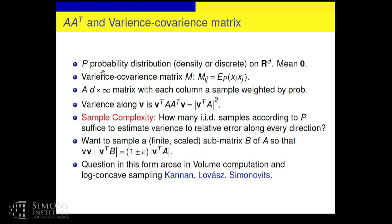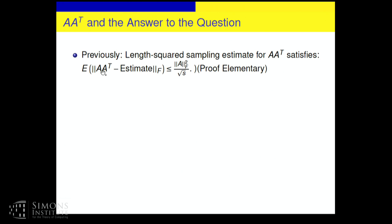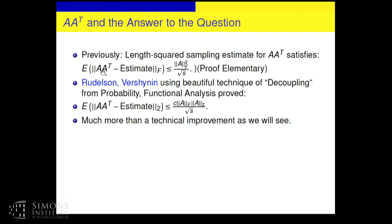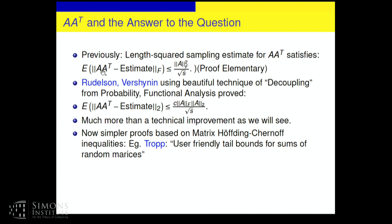So this question came up in a completely different context, volume computation. Actually, there's going to be a talk on quantum computing and volume computation later in the day, I see. So the thing we proved is all Frobenius norm on the right hand side. Somebody asked me a question. And now there is actually a better result due to Rudelson-Vershynin using some nice functional analysis. They proved the following. What seems to be a technical improvement? One of the Frobenius norm terms has been replaced by a spectral norm. But it's actually a much more fundamental improvement. It's not just technical. It's crucial for applications like graph sparsification. And now there are simpler proofs of this without going into the functional analysis technique by using matrix Chernoff inequalities, Hoeffding-Chernoff inequalities for matrices.